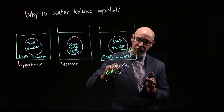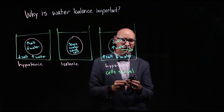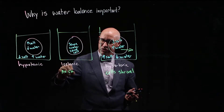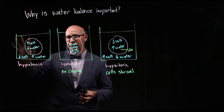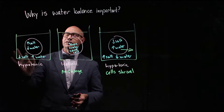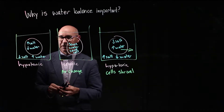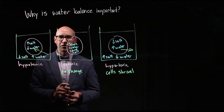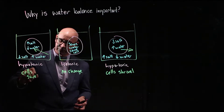The cells will shrivel. In the isotonic scenario, there's going to be no net movement because the water concentration is the same, so the cells will remain the same — there'll be no change. Now in the hypotonic scenario, the solution on the outside of the cells has lots of water and very little salt, compared with inside the cells which has high salt and low water. So what's going to happen is the water is going to move along a concentration gradient from high water to low water, resulting in a net movement of water into the cells, and the cells are going to swell up.